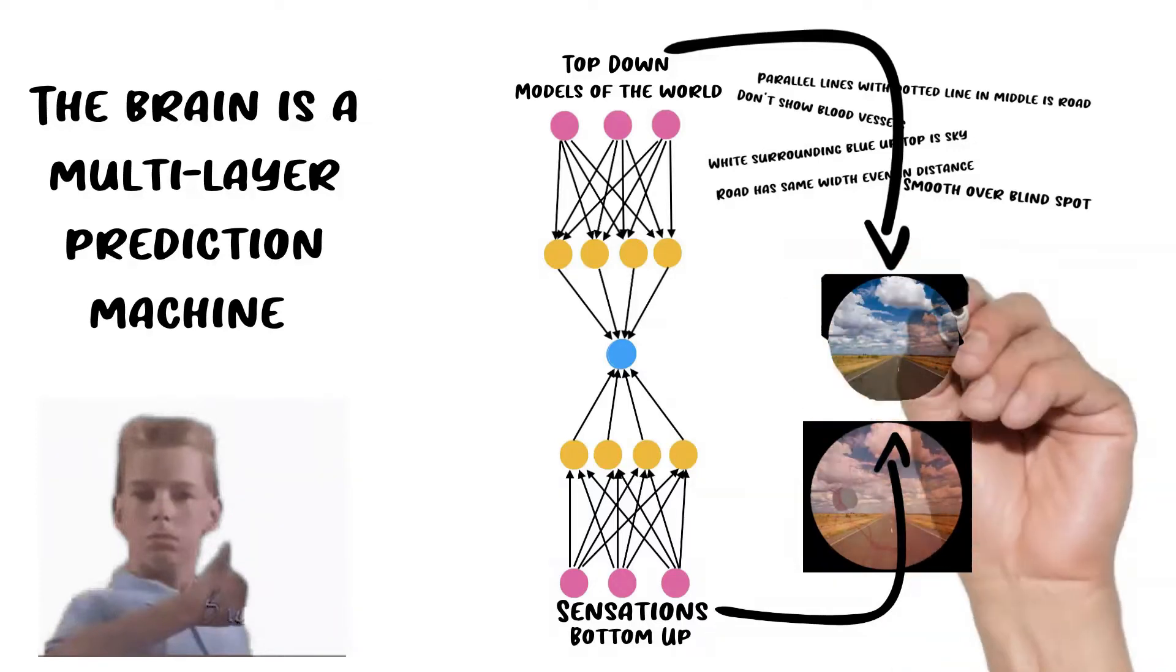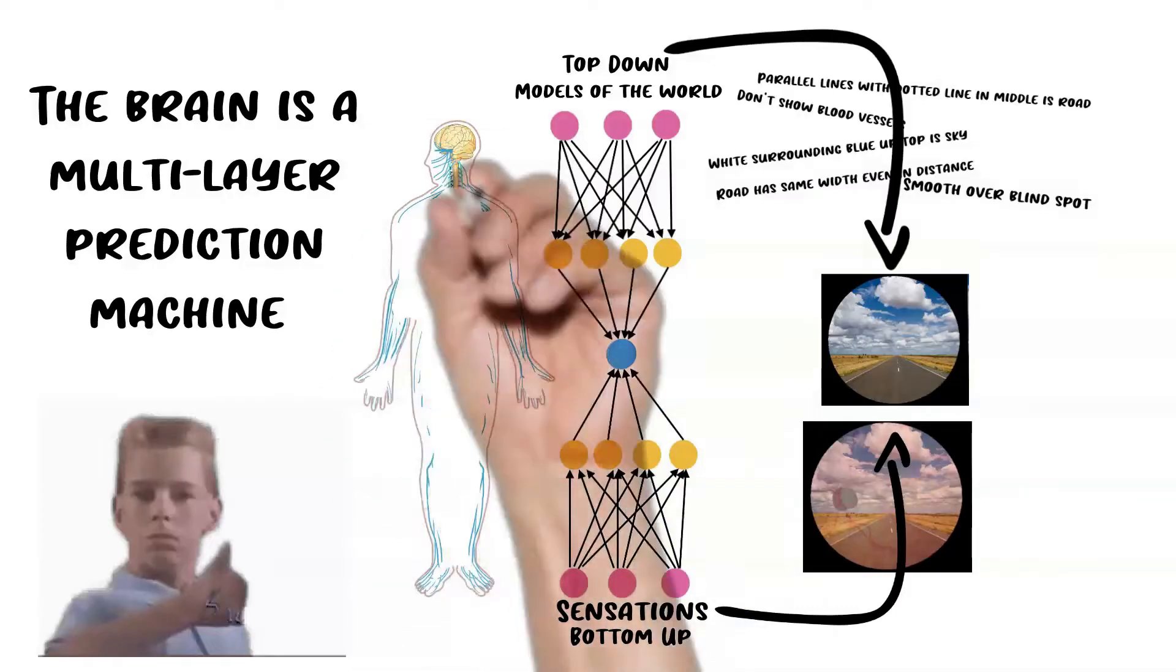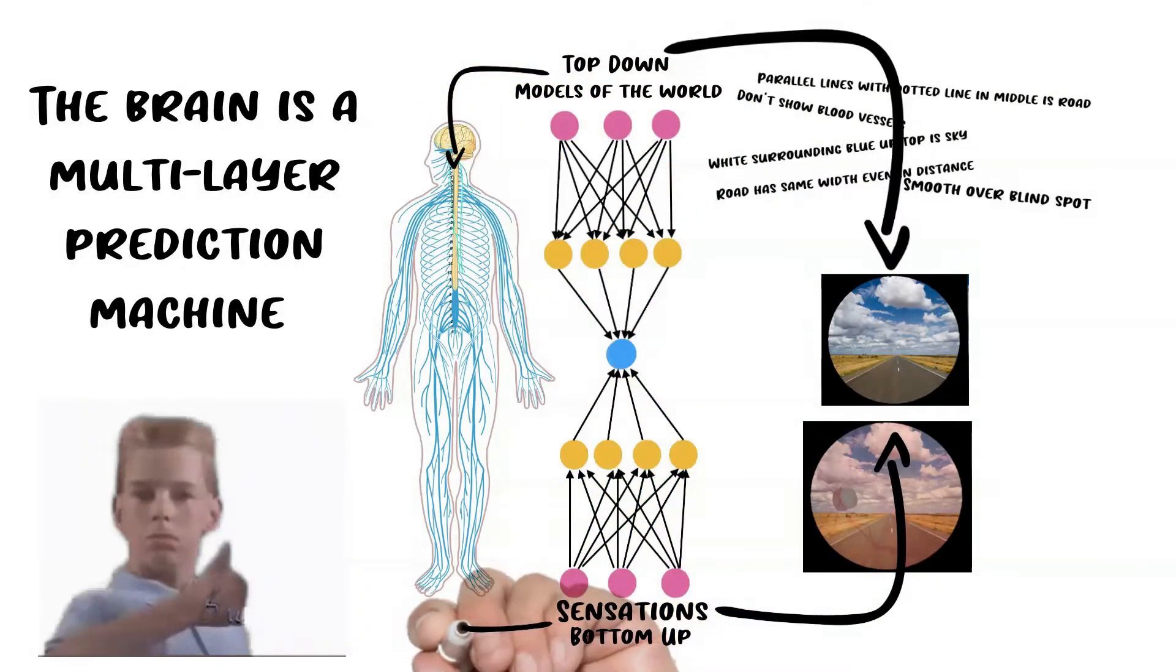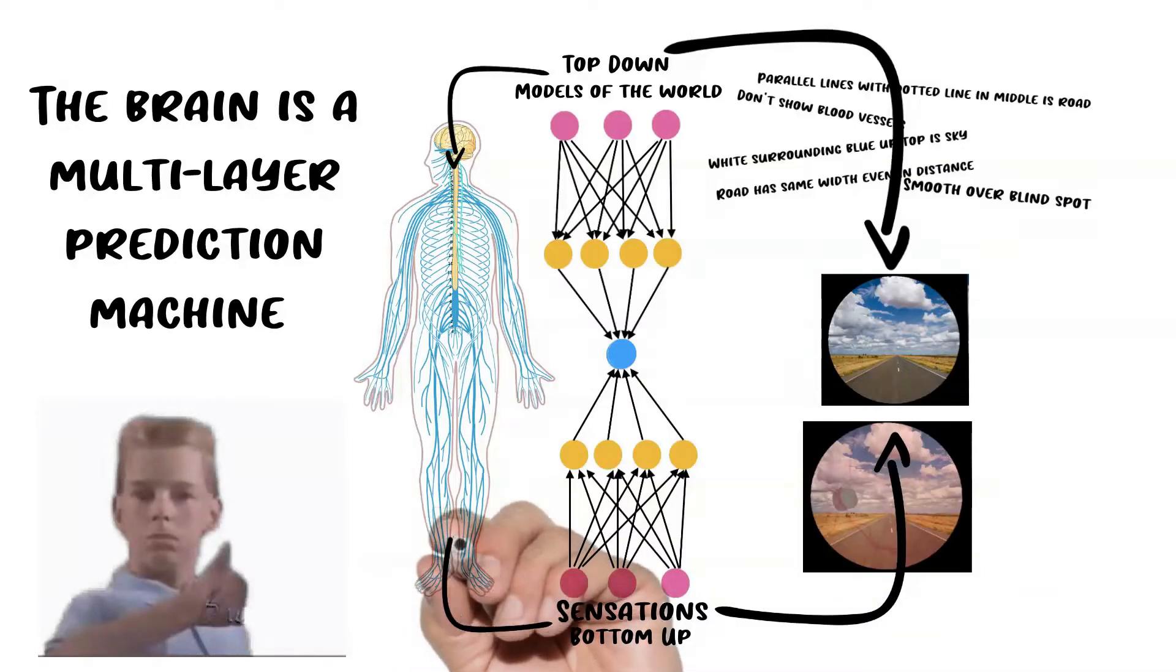One little trick I use to remember top-down and bottom-up is picturing our nervous system. Top-down is our predictions, so I think of our brain because that's where the models exist. Then bottom-up is our sensations, so I picture our body because that's where the sensations come from. Both streams are probabilistic in nature.